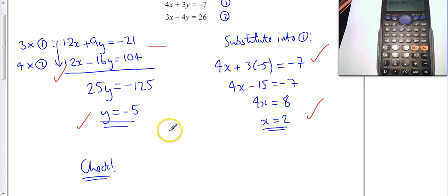It has to work in both. So 3 lots of 2 minus 4 lots of minus 5 equals 26. Well, 3 lots of 2 is 6, minus 4 lots of minus 5 is plus 20. That does equal 26. So I know I'm right, so I know I'm going to get the marks.